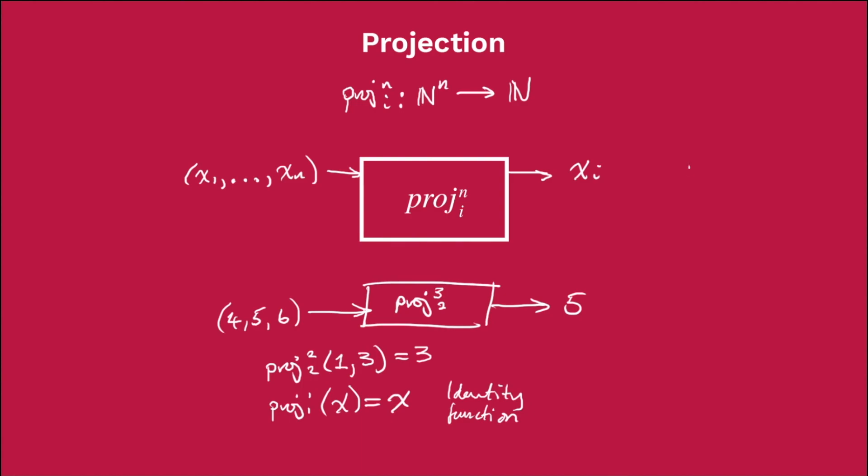So these parameters, n has to be greater than zero, obviously, because you can't project out an element if you don't give it any elements in. And i, of course, also has to be greater than zero, and has to be less than or equal to n. So you can't project the fourth element of a three element vector, for example. So for any n and i which meet this criteria, this is a total function on this domain, because we can pick out the ith element of this n element input.